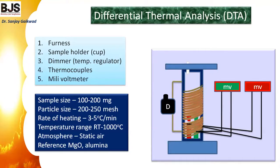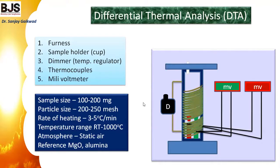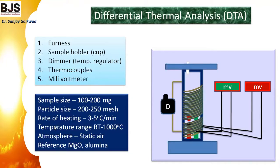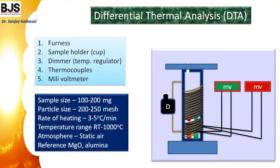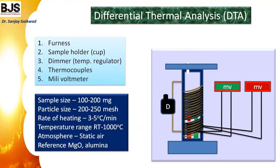The DTA instrument uses a furnace, sample holder, dimmer, thermocouples, and voltmeter. The sample size is similar to that used in thermogravimetric analysis. The same factors apply: sample size, particle size, rate of heating, temperature range, atmosphere, and reference compounds. The temperature difference between the two compounds is measured simultaneously, revealing whether reactions are endothermic or exothermic.